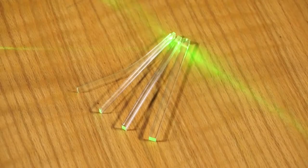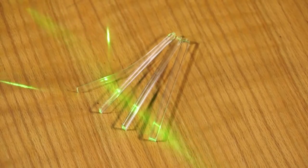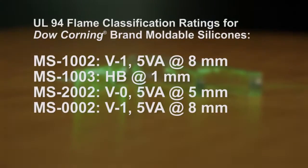These bars are molded in the required shape for UL94 flame classification testing. These are the UL94 flame ratings for Dow Corning brand moldable silicones.